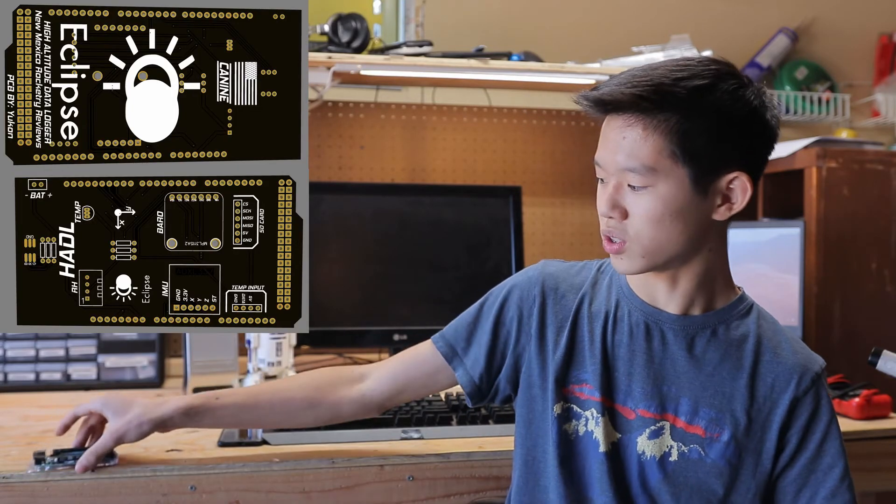But anyways, K9 Rocket Technologies—their channel link is down in the description—designed a PCB Arduino shield for us. You can see the design up here. So what that will do is we'll be able to just solder header pins on there and stick it right on there, and stick the sensors on there, and we'll have a functional sensor computer thingy.